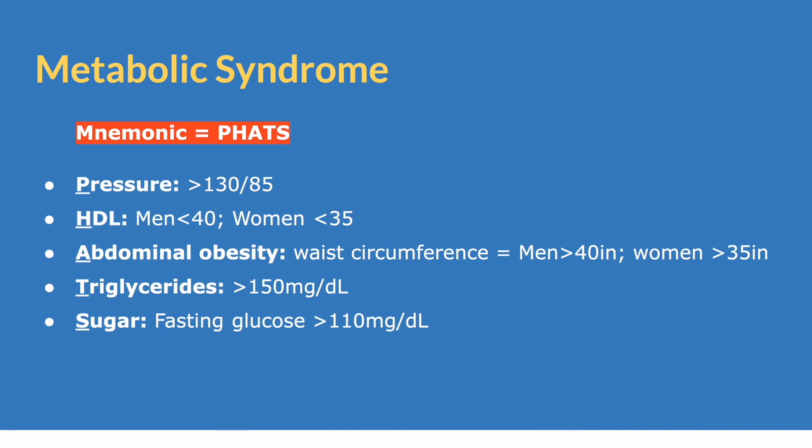For abdominal obesity, we'll see a waist circumference that is greater than 40 inches in men, or greater than 35 inches in women. For triglyceride levels, we'll see a level that is greater than 150. And lastly, for sugar, fasting glucose will be greater than 110.